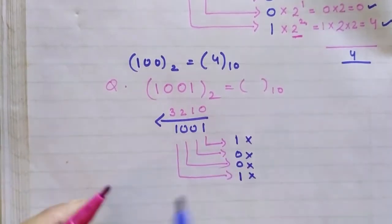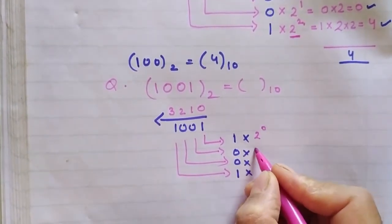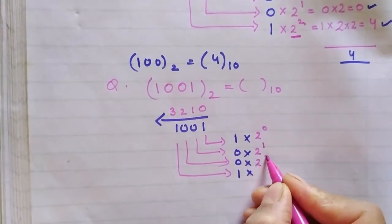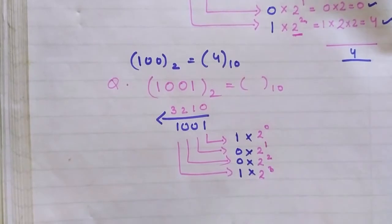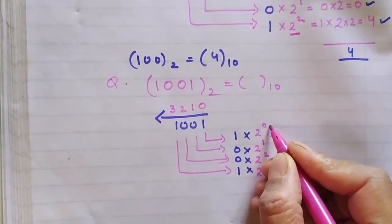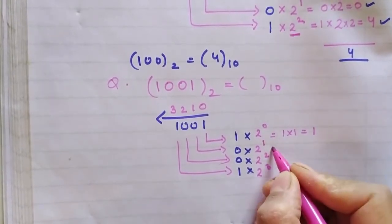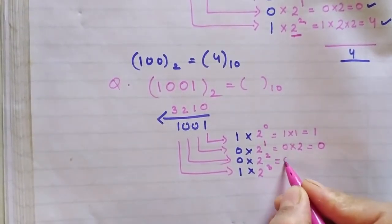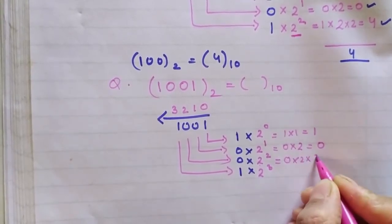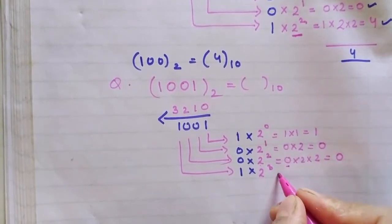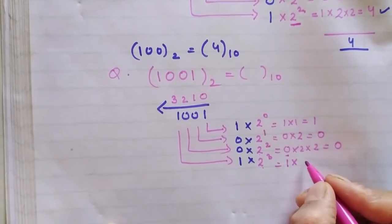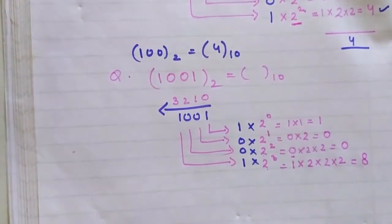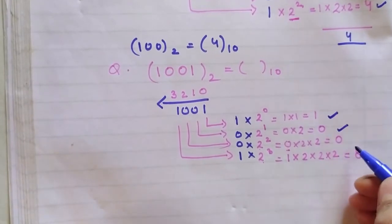The 1 which is at the units place will be multiplied by 2 raised to the power 0. This 0 will be multiplied by 2 raised to the power 1. This 0 will be multiplied by 2 raised to the power 2. This 1 will be multiplied by 2 raised to the power 3. Any number raised to the power 0 is 1, so 1 into 1 gives you 1. Then 0 into 2 raised to the power 1 is 0. Then 0 into 2 raised to the power 2 — any number multiplied by 0 is 0. Then 1 multiplied by 2 raised to the power 3: 2 raised to the power 3 means 2 multiplied by itself 3 times, so 2 to 4 to 8. Now adding all these 4 values: 1 plus 0 plus 0 plus 8.